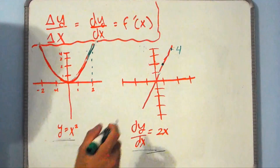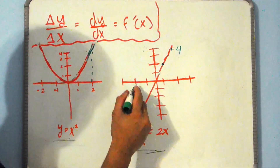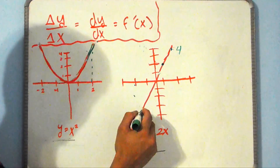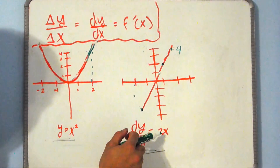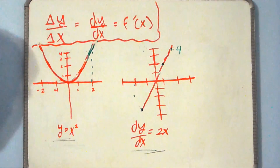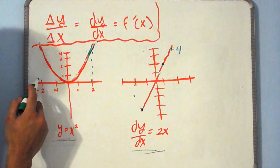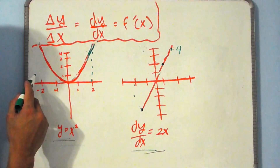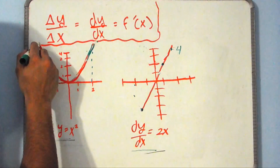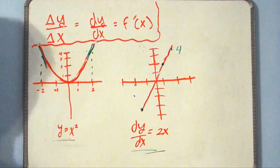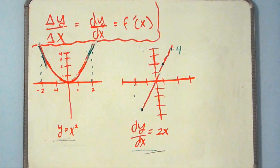And in the same way, let's say we pick the point negative 2. This graph says that at negative 2, the slope is negative 4, because negative 2 times 2 is negative 4. So we're saying dy dx is negative 4, or that at the point negative 2 on this graph, the slope is negative 4. And if we draw a dashed line up here, we see the slope is in fact negative and it is in fact steep, so it does make sense that it can be negative 4.